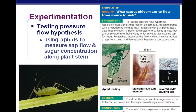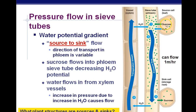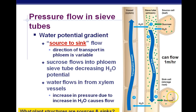In the springtime, the opposite occurs: since leaves have not yet grown, the sugar stored in the roots over winter is broken down from starch and transported in the opposite direction — back up to the branches to make new leaves. So the exception to source-to-sink flow from leaves down to roots occurs in the springtime. The sink is wherever the sugars are going — most of the time, that's the roots, except during the springtime for trees.